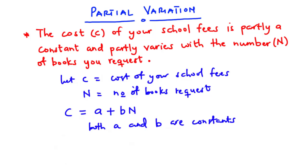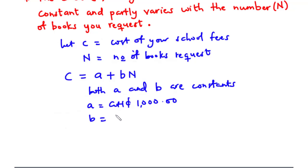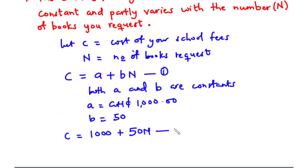Now let's assume that when you accept to become a student of that school, you are supposed to pay a fixed amount of one thousand Ghana cedis, so a equals one thousand. Let's say the constant b is 50. So from this equation we have C equals one thousand plus 50n. Let's call this equation 2 — this becomes the equation that determines the cost of a student's school fees.